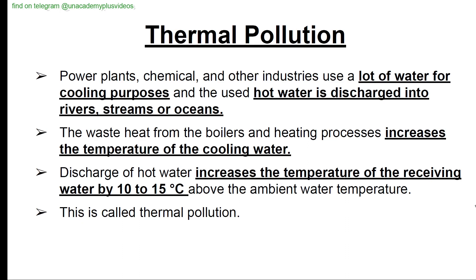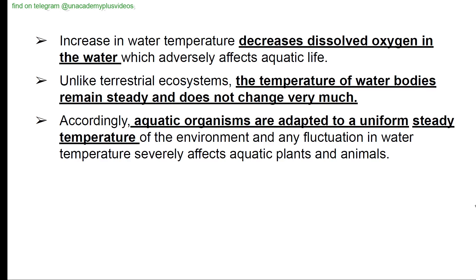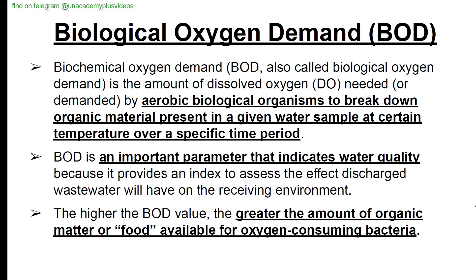Thermal pollution: power plants and chemical industries use large amounts of water for cooling and discharge hot water into rivers, streams, or oceans. Waste heat from boilers and heating processes increases the temperature of cooling water discharge by 10 to 15 degrees Celsius above ambient water temperature — this is called thermal pollution. Increase in water temperature decreases dissolved oxygen, adversely affecting aquatic life. Unlike terrestrial ecosystems, aquatic organisms are adapted to steady temperatures, so any fluctuation severely affects aquatic plants and animals.